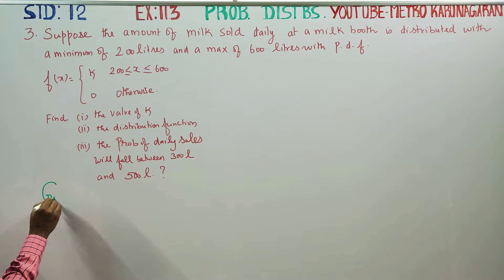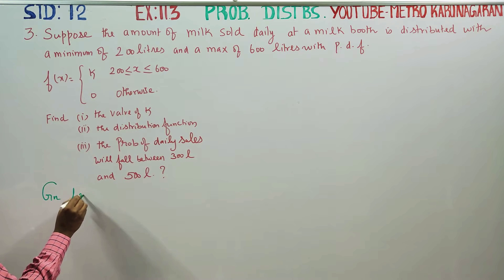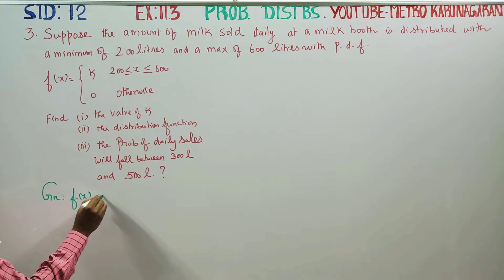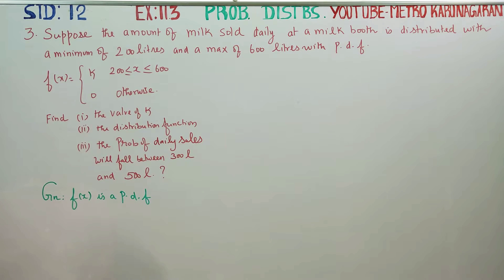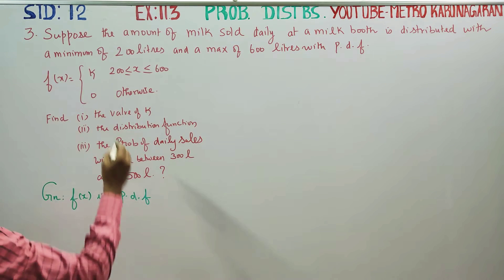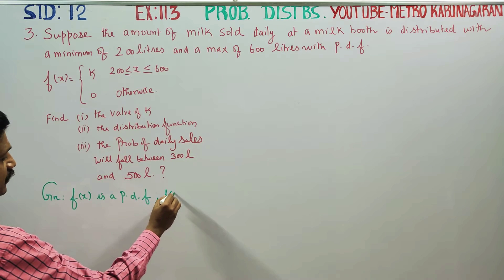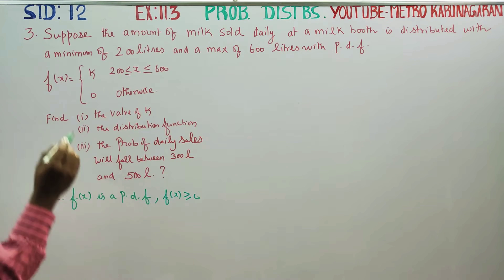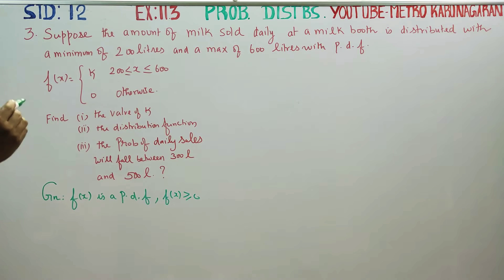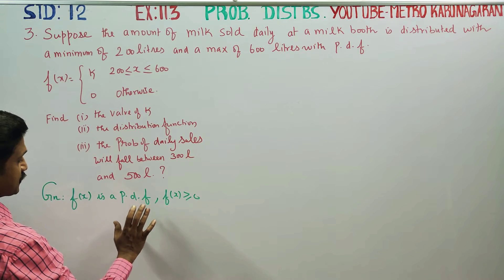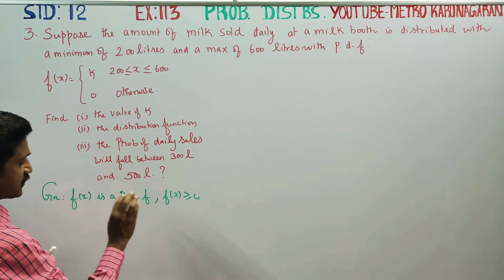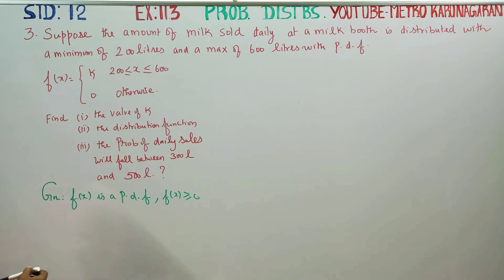Given f(x) is a probability density function, the function value is greater than or equal to 0. If you have a minimum sales and maximum sales, you are able to get the value of k directly from the formula.